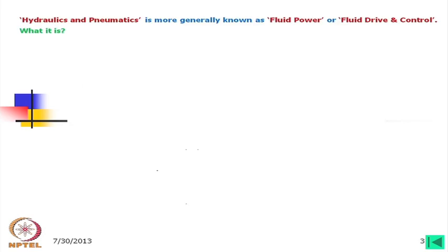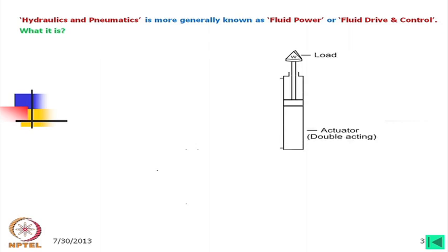Hydraulics and Pneumatics is more generally known as fluid power or fluid drive and control. Consider a load which is to be lifted to a height — there are many mechanical means, but we can think of an actuator which is a piston cylinder. We can put it vertically and on the piston end we can put the load, which can be lifted by means of lifting the piston through fluids.